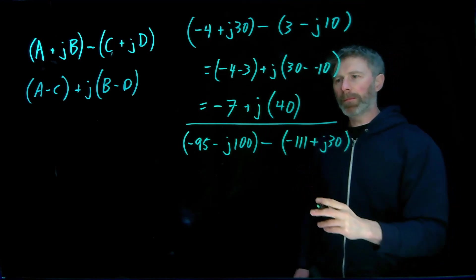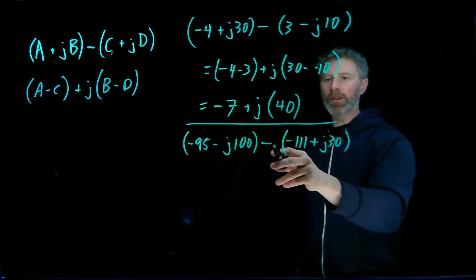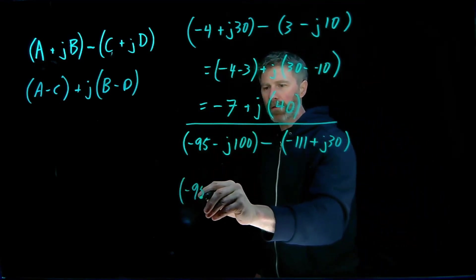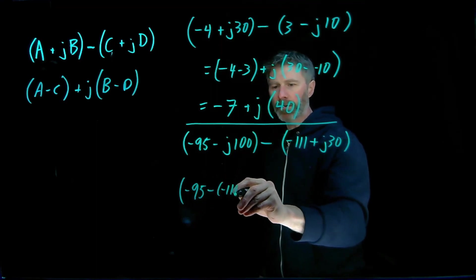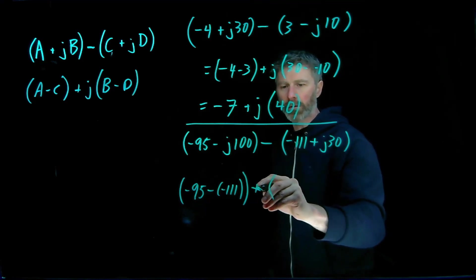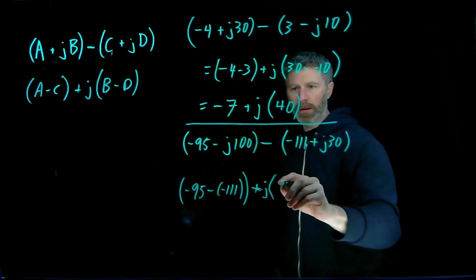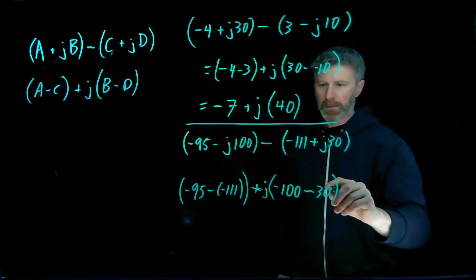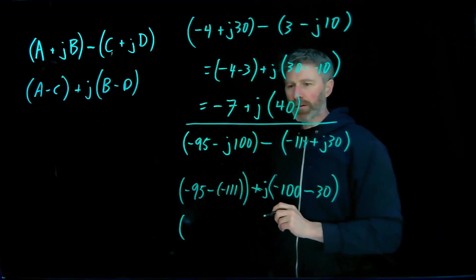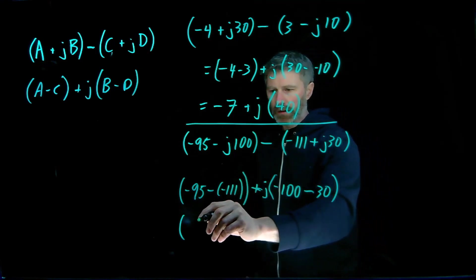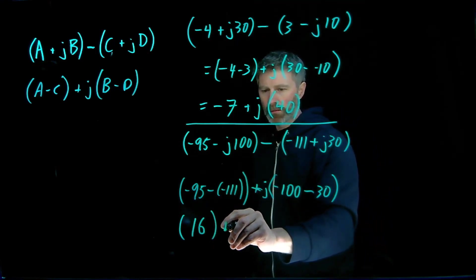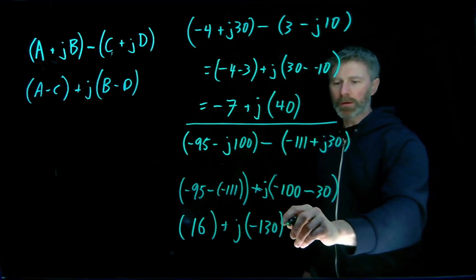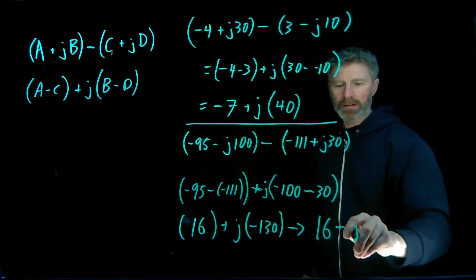As a second example, I have minus 95 minus j100 minus negative 111 plus j30. So again, I take those real parts. I've got minus 95 minus negative 111 plus j times negative 100 minus 30. So this will work out to negative 95 plus 111 gives me 16 plus j times minus 100 minus 30. That's minus 130. Or more commonly, this will be written out as 16 minus j times 130.